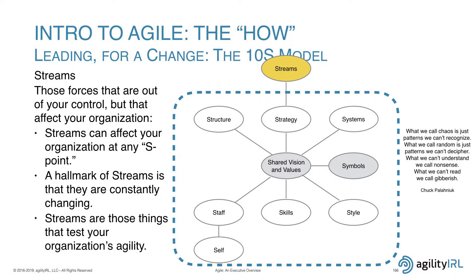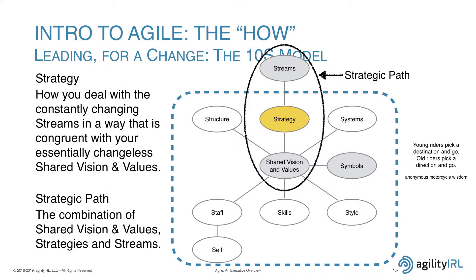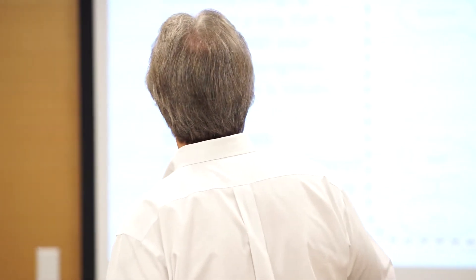Streams are the things outside your organization over which you have no control — market forces, exogenous factors (none of those start with S). A hallmark of streams is that they are constantly changing, and they test your organization's agility. Strategy is how you deal with those constantly changing streams in a way that stays true to your essentially changeless vision and values. That's the difference between strategic planning in a static versus a dynamic world. Together, streams, strategy, and vision/values are referred to as the strategic path.